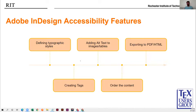Once you define all the different typographic styles in your document, you move toward creating different kinds of tags — these tags are the HTML tags that will be used in the HTML file. We define different kinds of tags — like paragraph tags, H1 heading tags, H2 heading tags — that the screen reader will use when going through the document. Then we try to map those tags to our typographic styles. The third step is adding alt text to images and tables.